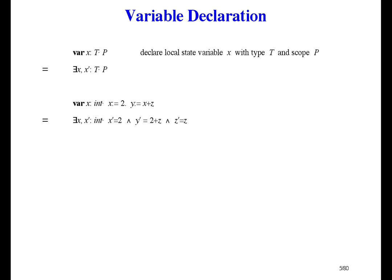First we get rid of the programming notations. Var is existential quantification over x and x prime. And the two assignments say the final value of x is 2, the final value of y is 2 plus z, and z is unchanged.